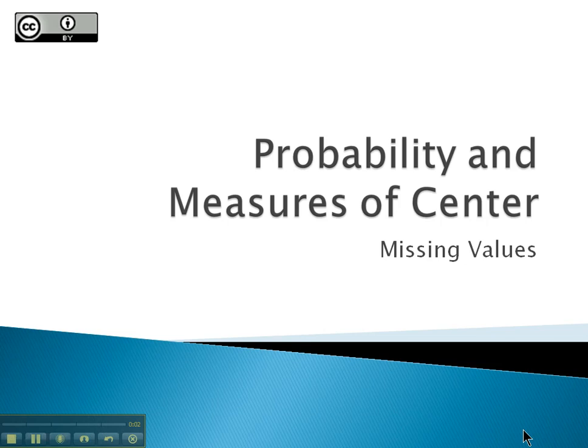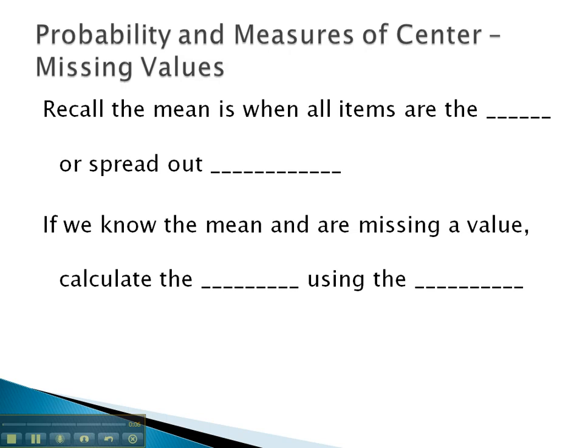In this video, we're going to look at how we can find a missing value if we are given a measure of center. We're going to look specifically at the mean, and we want to recall that the mean is where all the items are the same, where all the data is spread out evenly between all the different possible entries.